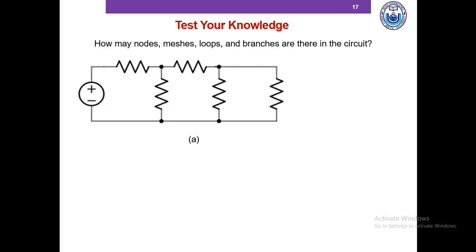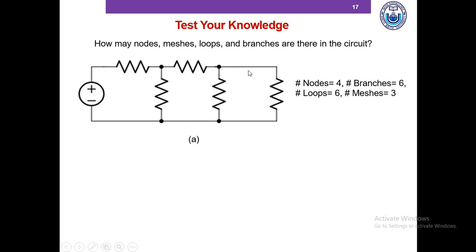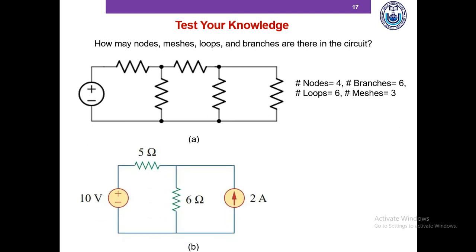Please pause the video and try to identify the number of nodes, meshes, loops, and branches in the circuit, and then we'll match our answers. So hopefully you've been able to identify the nodes: one, two, three, and four. Branches are one, two, three, four, five, six — six branches. Loops are one, two, three, four, five, six — six loops. And meshes is just the number of windows — this one, this one, and this one — three meshes.